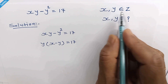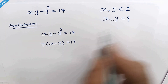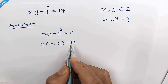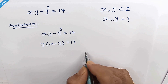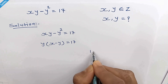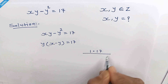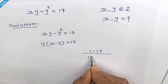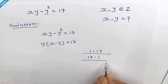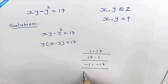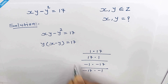Since x and y are integers, x minus y is an integer as well. The factor pairs of 17 are: 1 times 17, 17 times 1, negative 1 times negative 17, and negative 17 times negative 1.